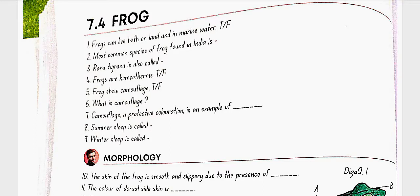Frog. Frog can live both on land and in marine water. No, this is false. Most common species of frog found in India is Rana tigrina. Rana tigrina is also called bullfrog.